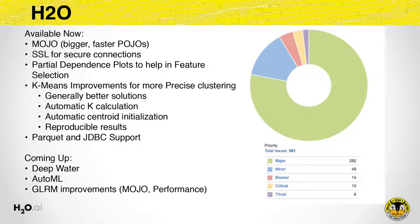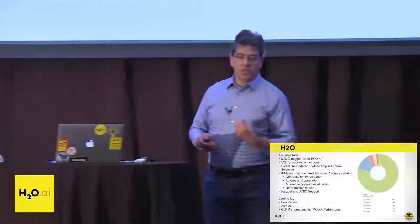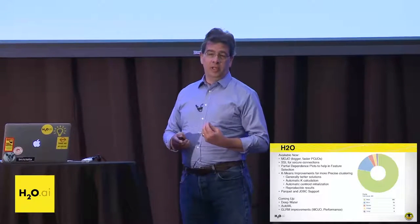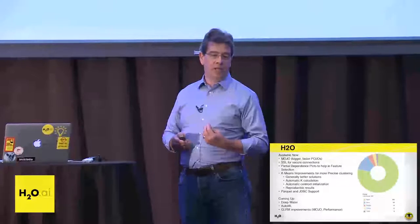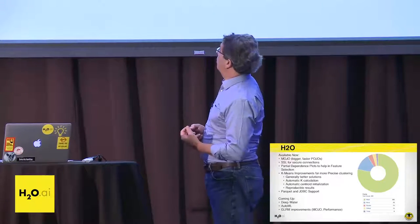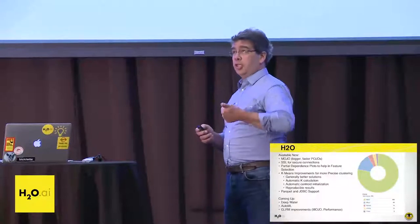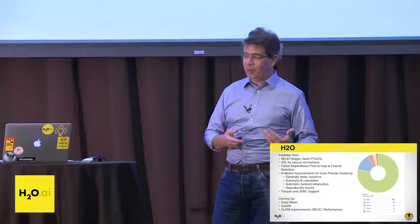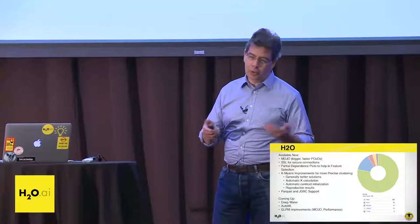The first thing is this thing we call the MOJO. Taylor was just talking about the POJO — the plain old Java object — and that's a great model for outputting your machine learning models and incorporating them into Java programs. The problem is if you get over a gigabyte of Java code, the Java compiler can't compile it. So we introduced this thing called the MOJO, which stands for Managed Object Optimized. We sort of tortured ourselves to come up with a really good acronym, and we thought MOJO was pretty good.